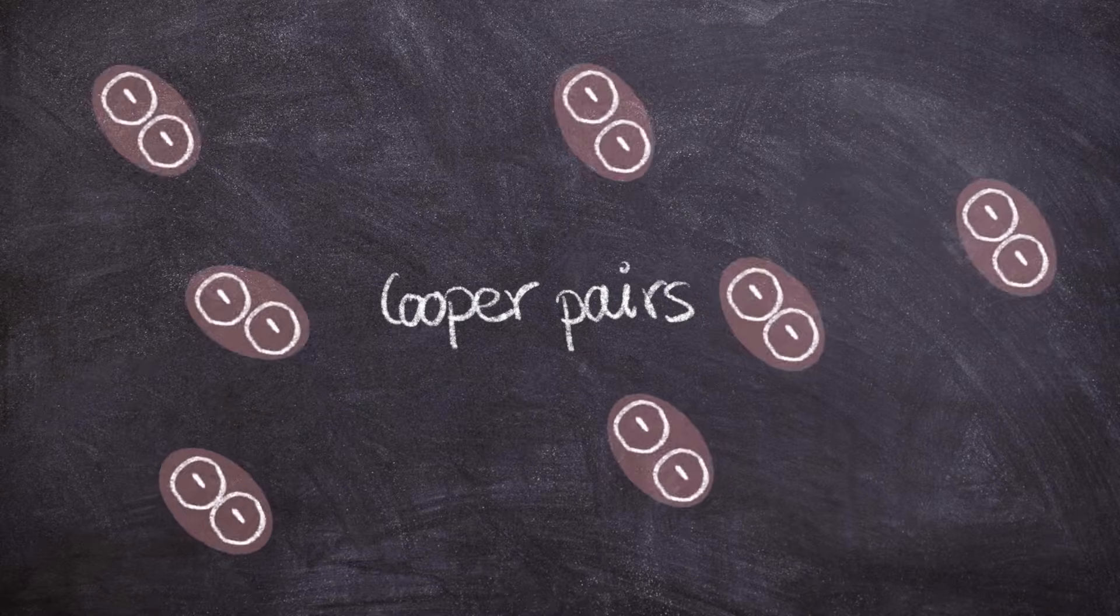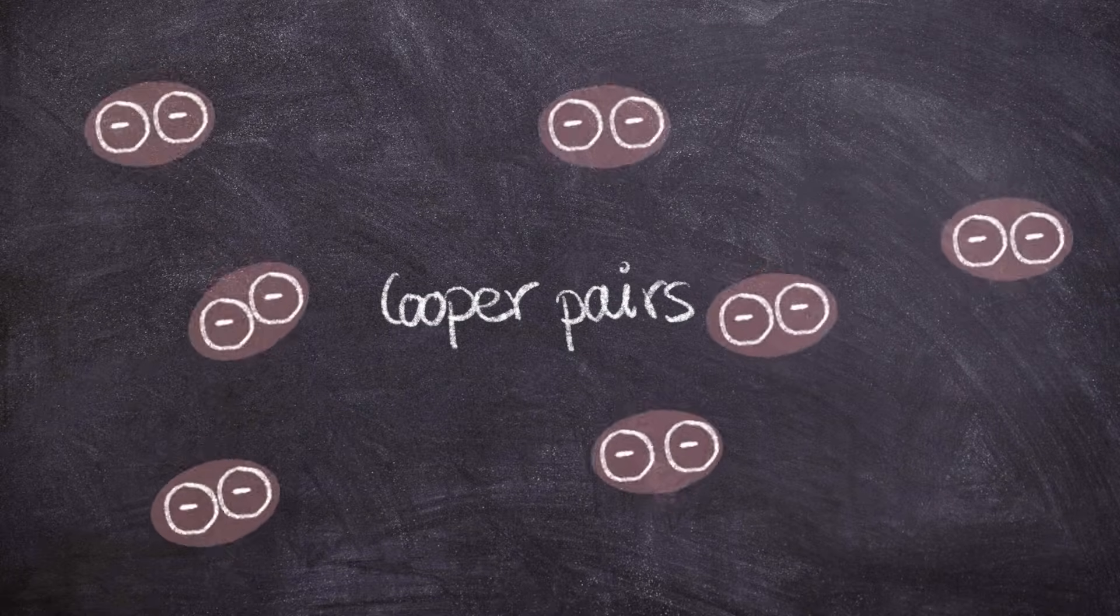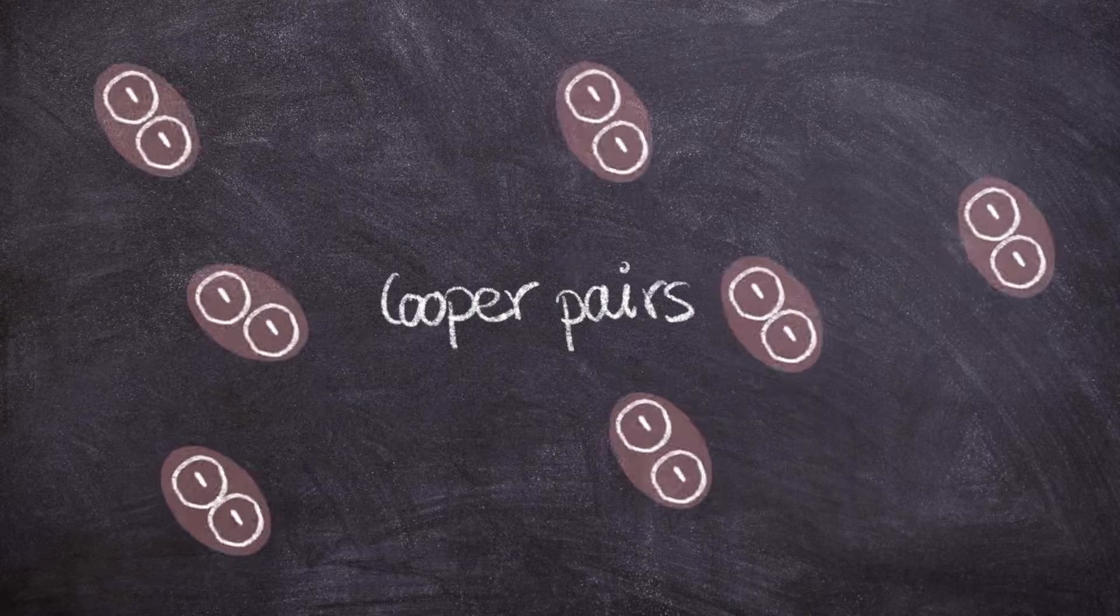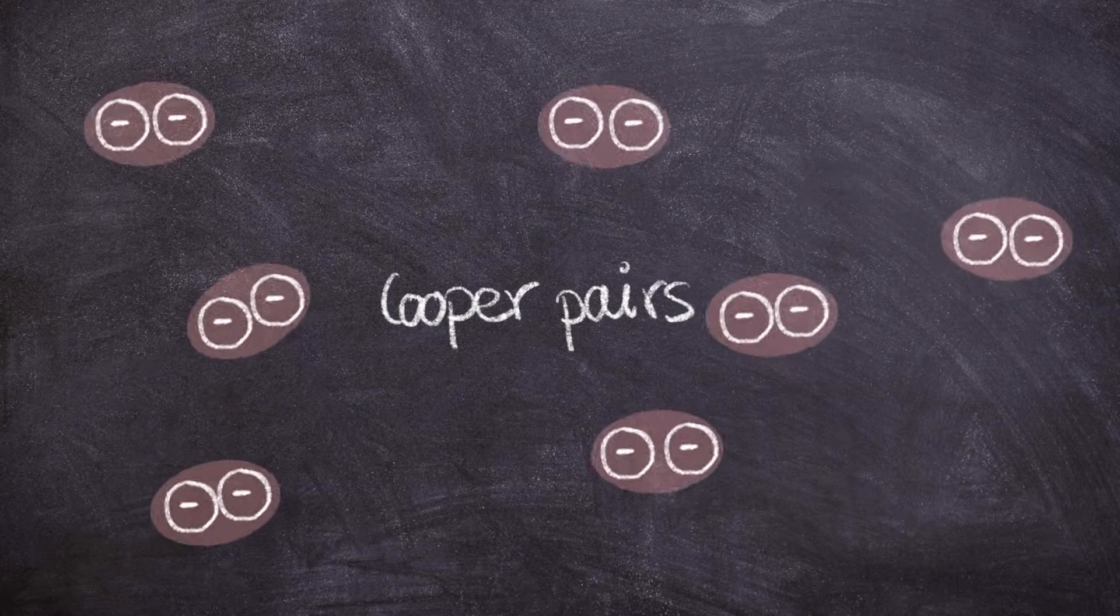Superconductivity is a phenomenon which occurs when electrons pair up in so-called Cooper pairs, which allows lossless conductivity and conductivity without resistivity, as well as the repulsion of magnetic fields. Typically two electrons repel each other through the Coulomb interaction, but in certain cases we can have attractive interactions which allow them to pair up. In some materials this mechanism is well understood, but in so-called unconventional superconductors this mechanism is much less understood, particularly in superconductors which occur at higher temperature.